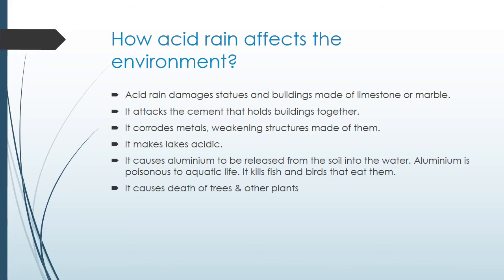Acid rain causes death of trees and other plants. Their leaves drop off and their roots are damaged, so they cannot absorb water. Acid rain also removes minerals and nutrients from the soil that trees need to grow.